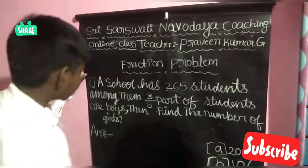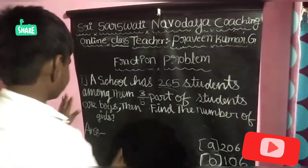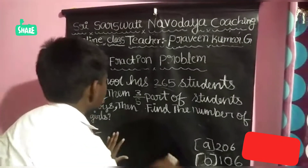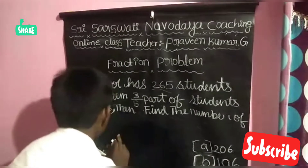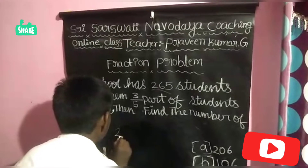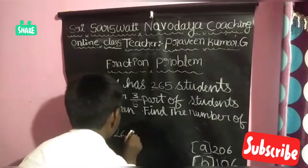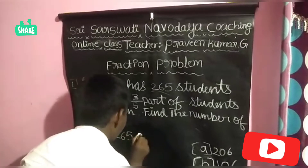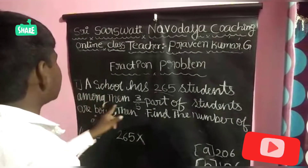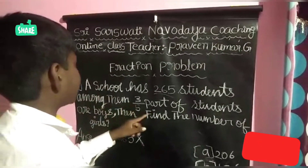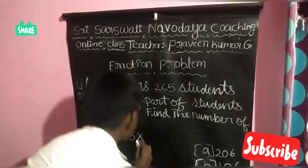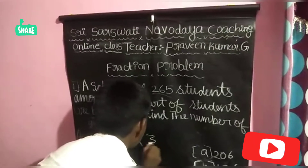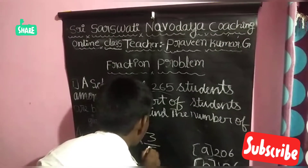Now we have to find the girls. Total students is equal to 265, and among them 3/5 part are boys, so boys = 3/5.